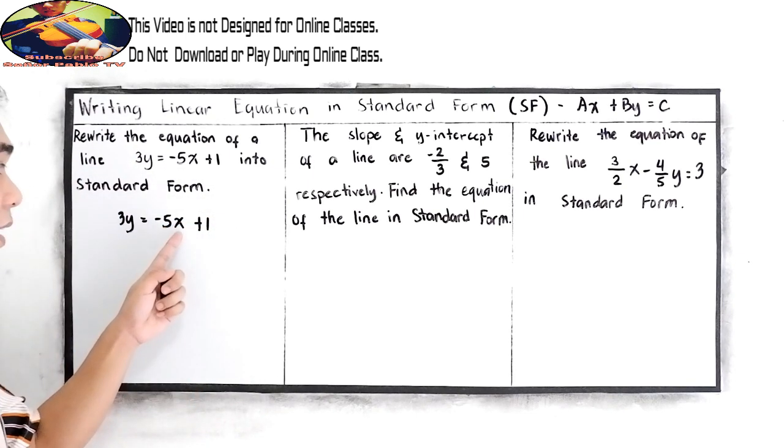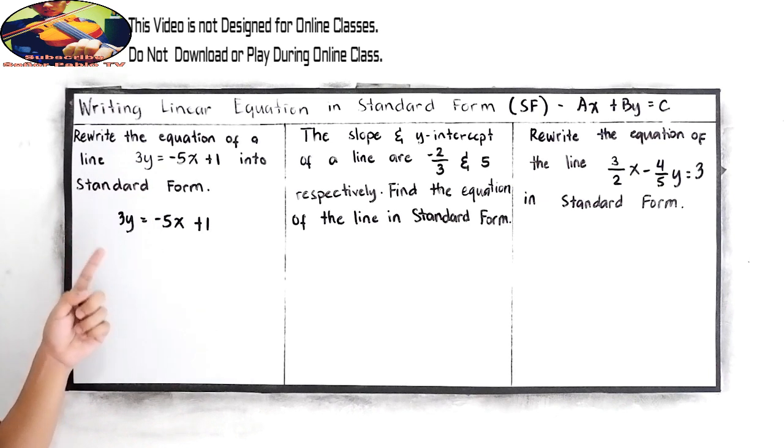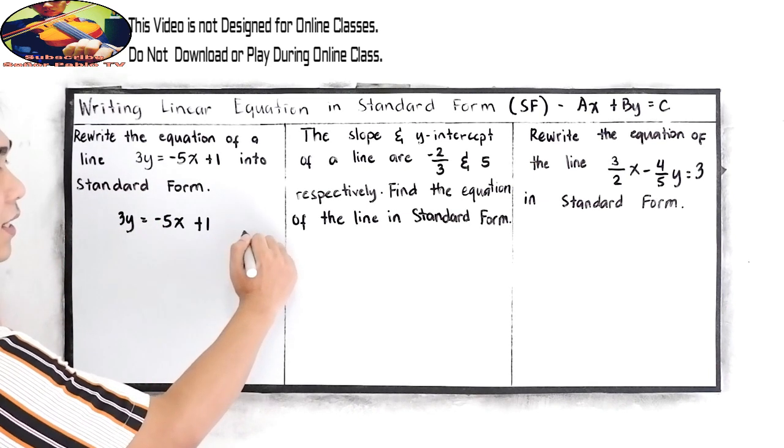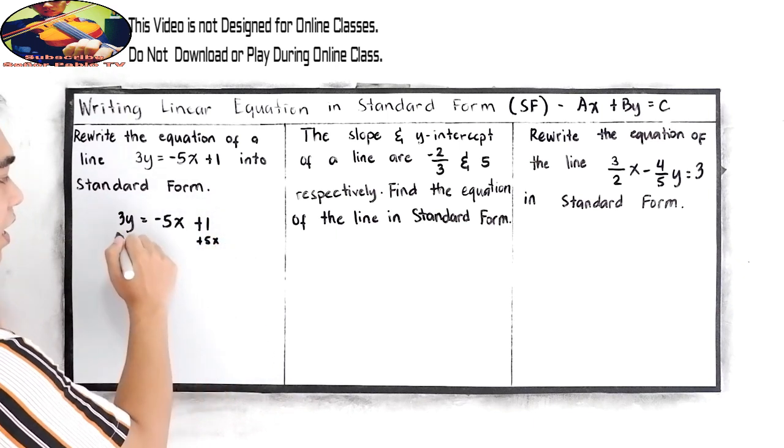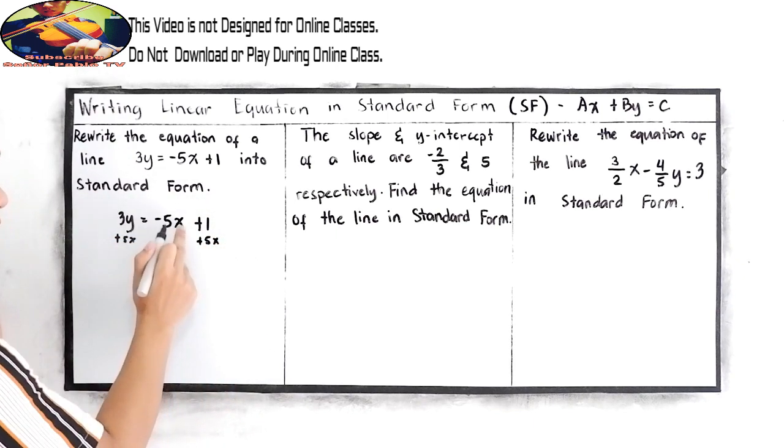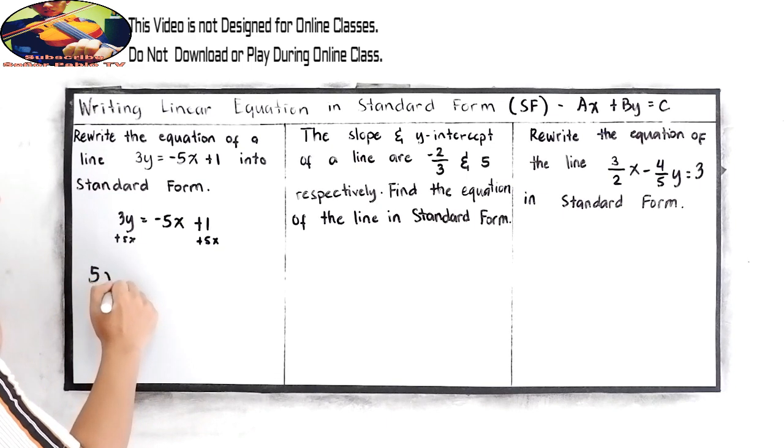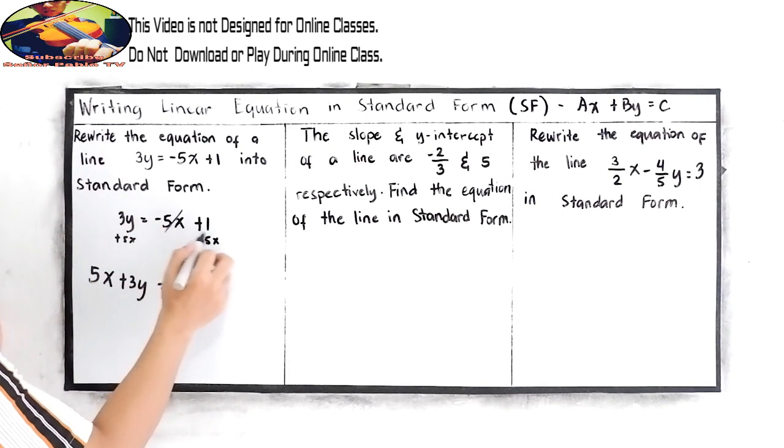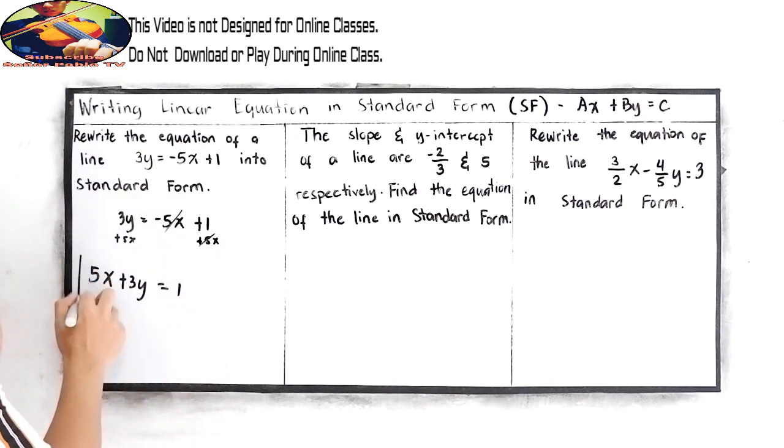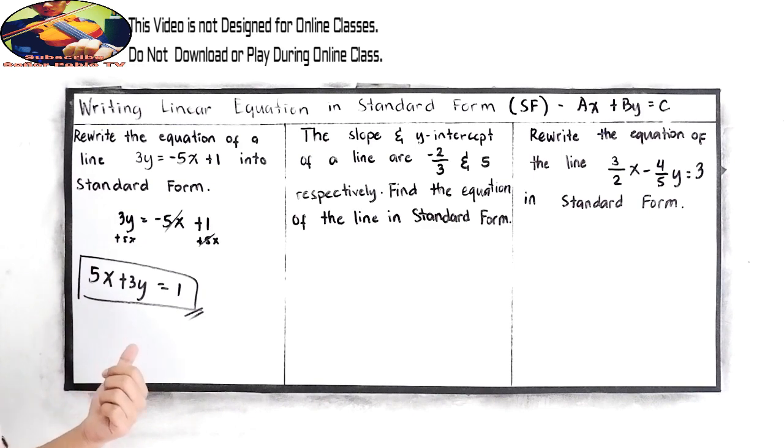Our x must be on the left side. By addition property of equality, we add 5x to both sides. This becomes 5x + 3y equals positive 1. So our standard form is 5x + 3y = 1.